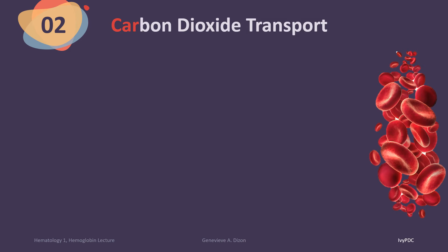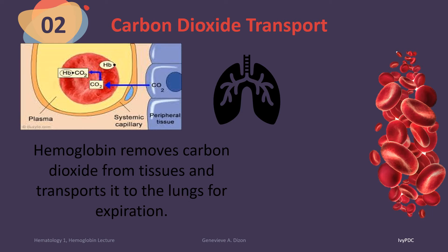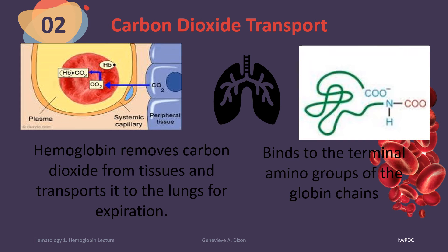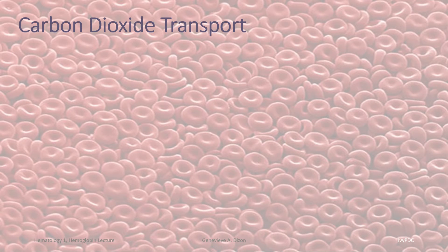It's now time to discuss the second function of hemoglobin, which is carbon dioxide transport. Hemoglobin is able to remove carbon dioxide from the different parts of the body or from the tissues and transports it to the lungs so that it can be expired. The carbon dioxide binds to the terminal amino acid groups of the globin chains — the heme portion binds with oxygen while the globin portion binds with carbon dioxide. Carbon dioxide is transported in different forms; unlike oxygen, of which 97% is transported through hemoglobin and only 3% through plasma, carbon dioxide is a bit more complicated.